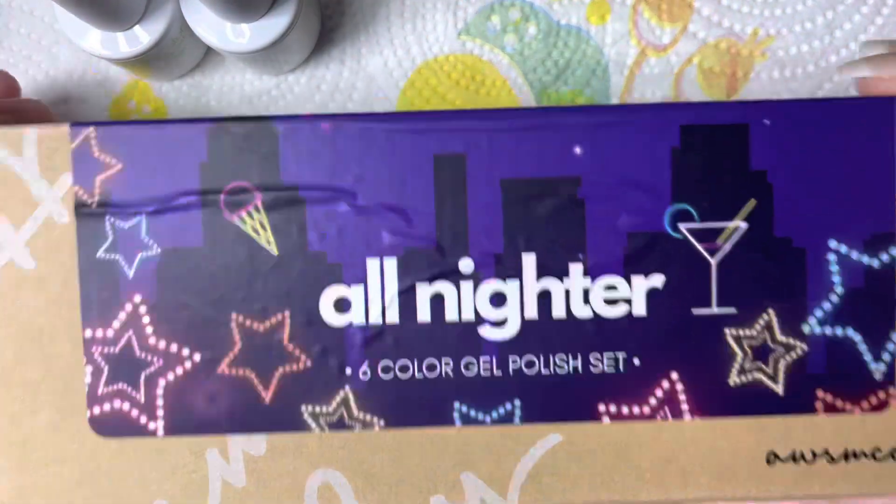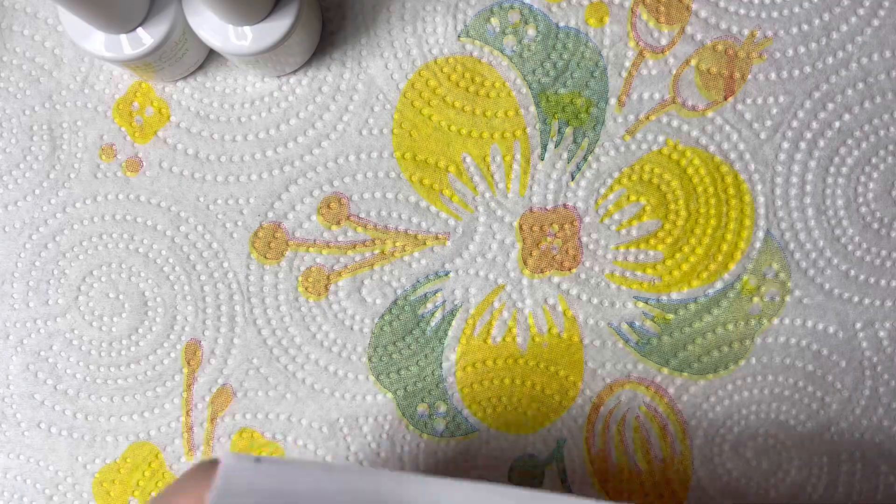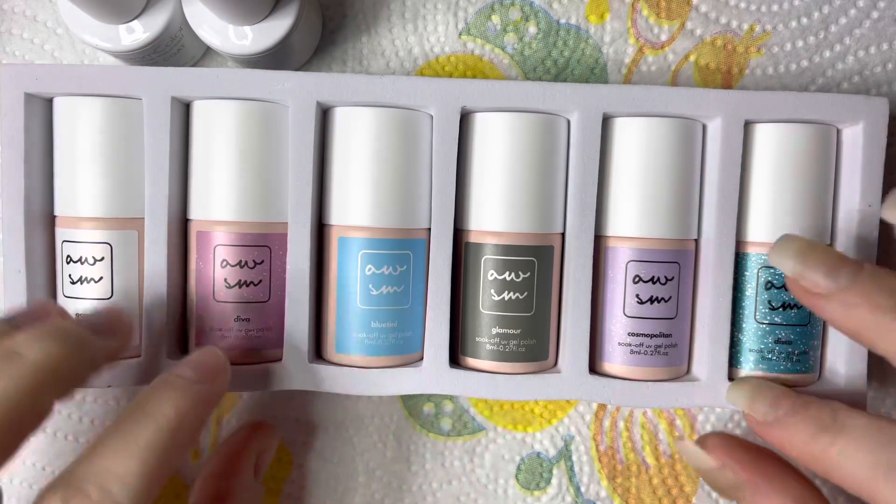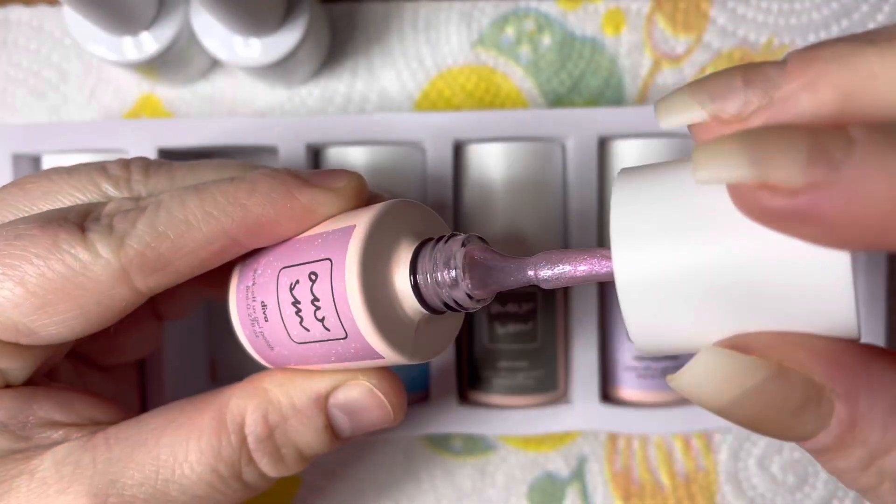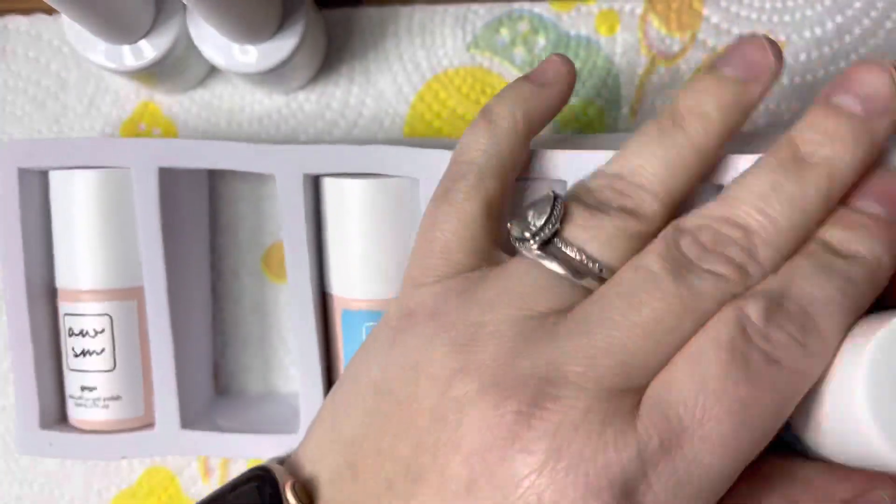Okay, so here they are filed and cleaned up. You can see that they yellowed a bit. So here I'm going to be using the Awesome Color All-Nighter gel polish set. I will leave that link down below. This is one of McCart's brands and I absolutely love these gel polishes.